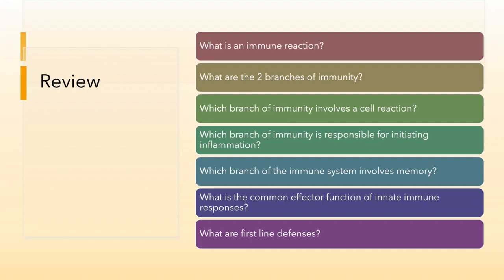So real quick, just an overview of an immune reaction: What is the immune reaction? What are the two branches? Which branch of immunity involves a cellular reaction? Which branch is responsible for initiating inflammation? Which one has memory? What is a common effector and function of innate immune responses? And what do we consider first or even second-line defenses? See you in part two.